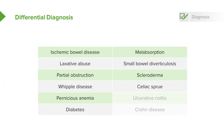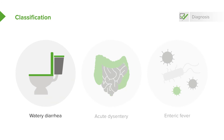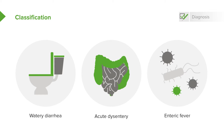Celiac sprue from gluten intolerance, and then ulcerative colitis and Crohn disease. So how do we classify diarrhea? We need to decide whether it's watery diarrhea, whether it's acute dysentery, or whether it's something like typhoid fever — enteric fever.